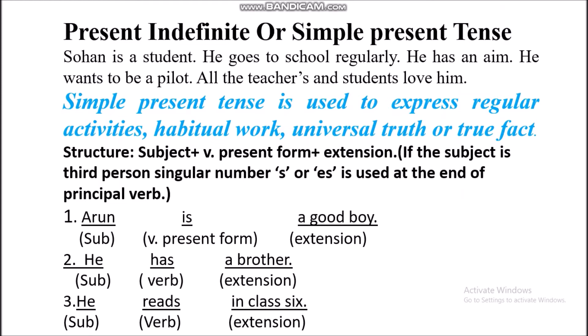Structure: Subject plus verb present form plus extension. If the subject is third person and singular number, S or ES is used at the end of the principal verb. For example: Arun is a good boy. He has a brother. He reads in class 6.